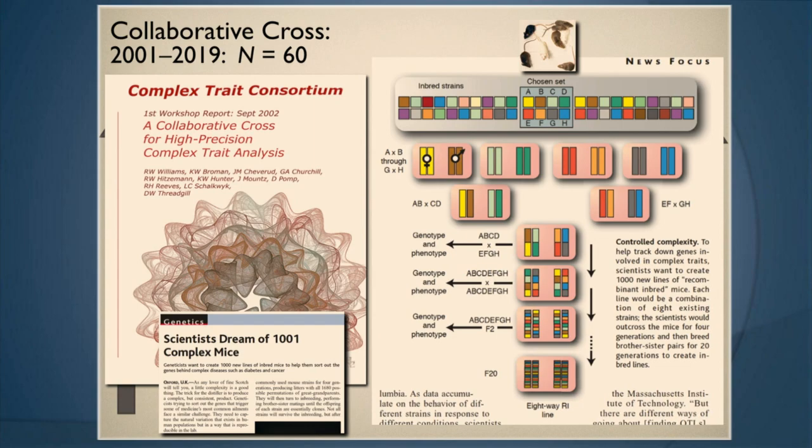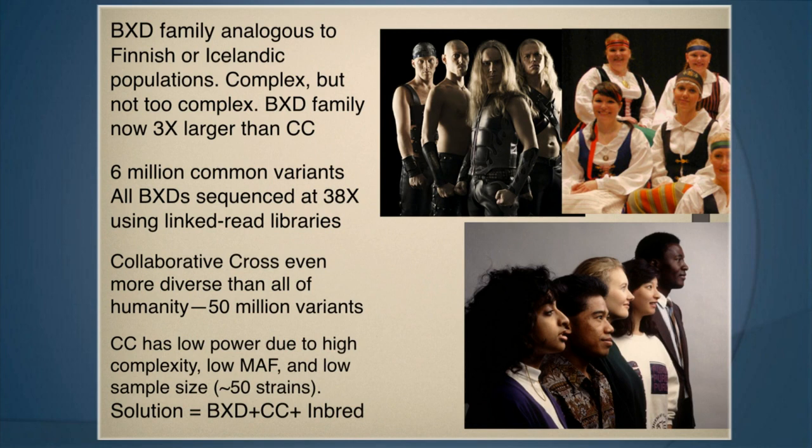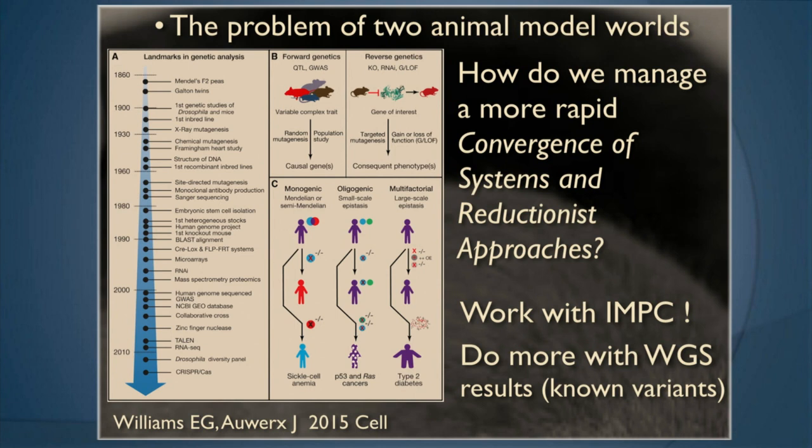What we have are resources that are sort of like Finland — maybe a little more diverse. What we'd like to do is reach down and actually cover all of humanity. This is the problem of the two animal model worlds that we have to bring together. There's a nice review from Johanna Ork's group showing how you can do that — the convergence of reductionist approaches and systems approaches. The conclusion for me is: our community has to work with you.